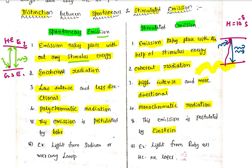Example of spontaneous emission: light from a sodium lamp or mercury lamp — white color, polychromatic. Example of stimulated emission: ruby laser, which produces only red color, or helium-neon laser. This is the simple answer.